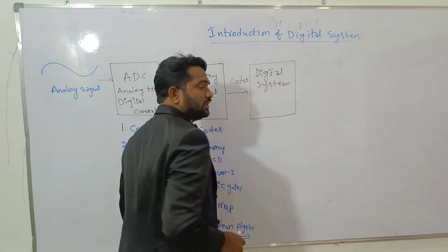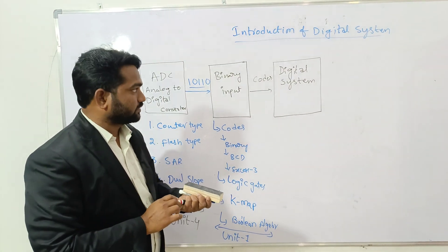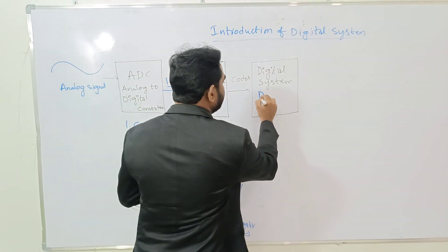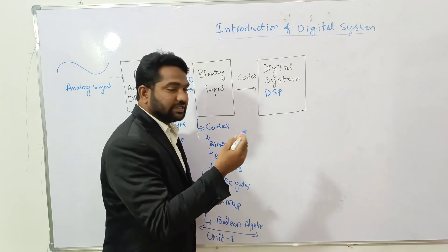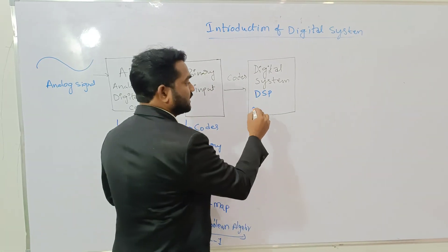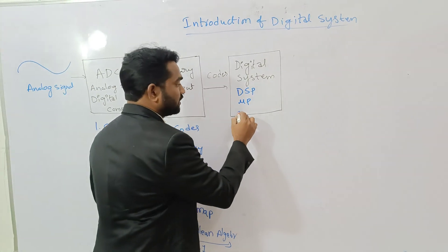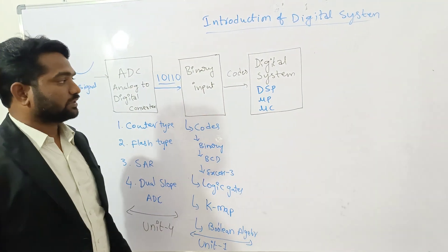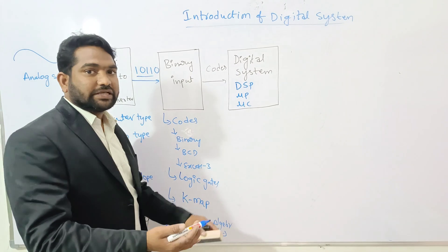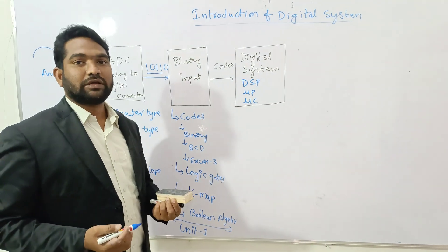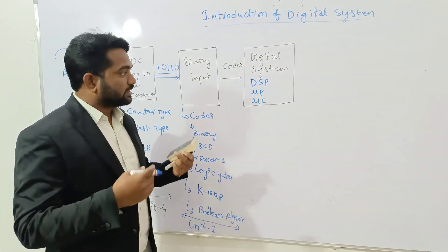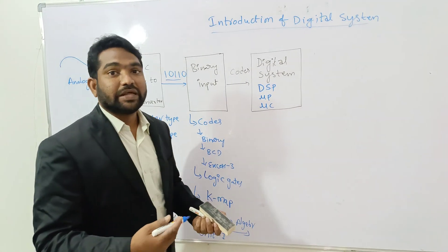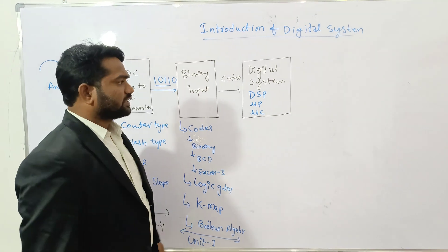We have different types of digital systems. One is DSP — Digital Signal Processing. The second is microprocessor. The third is microcontroller. All these are digital systems which accept different types of binary codes or binary inputs, process them, and give the required binary or digital output.